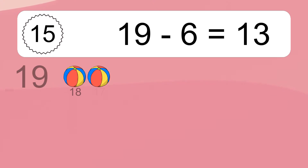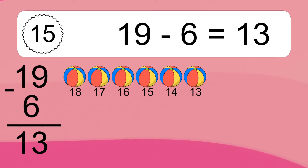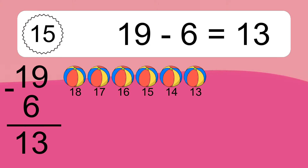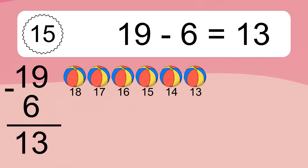19 minus 6 equals what? 19 minus 6 equals 13. Let's count it. 18, 17, 16, 15, 14, 13.